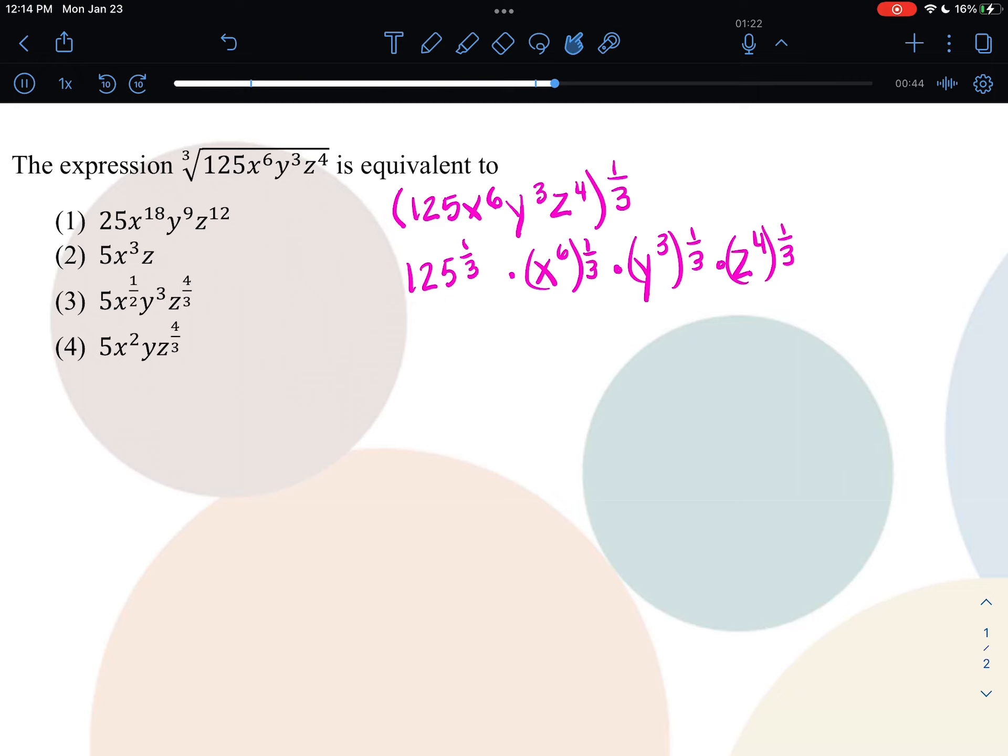125 to the 1/3 power is 5. x to the 6th times 1/3 is x to the 6/3, times y to the 3/3, times z to the 4/3. Simplifying a little bit more, I have 5 times x squared times y to the 1 times z to the 4/3.